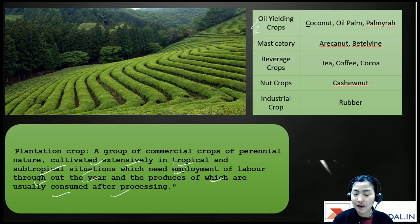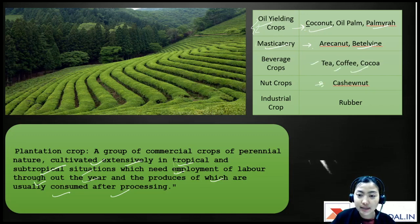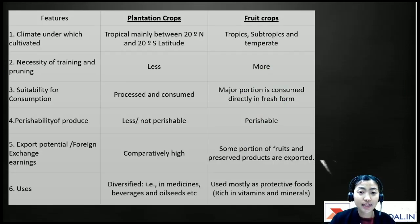I've made a table to make it easier. For oil-yielding crops we have coconut, palm oil, and palmyra. For masticatory we have areca nut and betel. For beverage we have tea, coffee, and cocoa. For nut crops we have cashew nuts, and for industrial crops we have rubber. These are the major plantation crops.